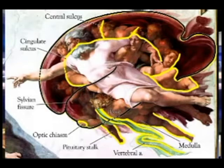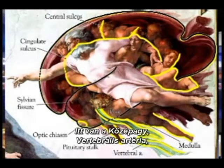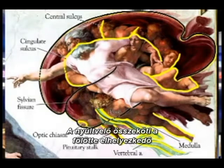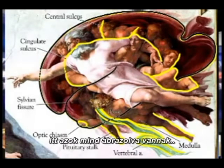Look at this. I don't know all my brain parts, but we have the optic chiasm, pituitary stalk — I know about that — vertebral artery. In other words, the artery that runs up and the medulla oblongata on the back of your neck that goes down and connects with your spine. All of those are depicted right there.